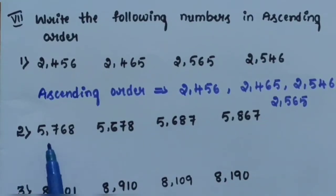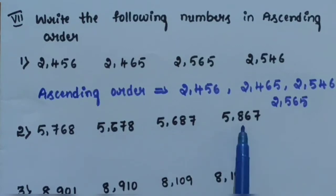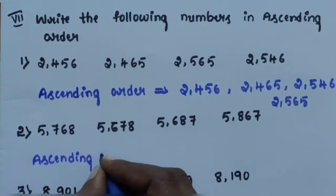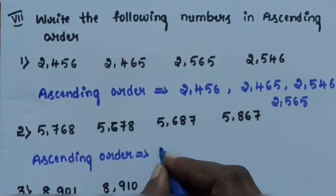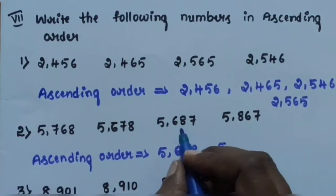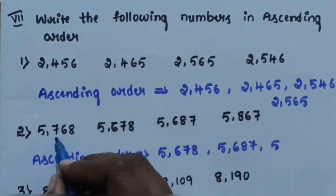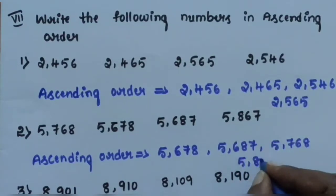Question number 2: arrange 5,768; 5,678; 5,687; and 5,867 in ascending order. Ascending order means arrangement from smallest to greatest. So 5,678 is the smallest. The order is: 5,678; 5,687; 5,768; and 5,867.